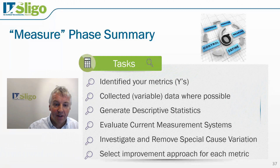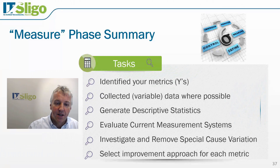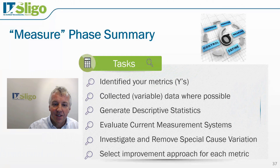That's the end of the measure phase. In summary, we've identified our metrics, collected variable data — actual measurements like diameter — rather than just attribute data (good or bad). We've generated descriptive statistics, evaluated our measurement systems, investigated and removed special cause variation, and selected the improvement approach for each metric.